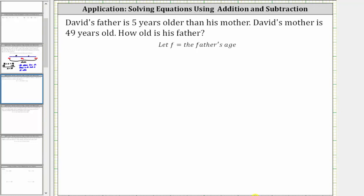We want to relate the father's age to the mother's age, and since the father is five years older than the mother, if we begin with the father's age and then we subtract five, this would equal the mother's age of 49.